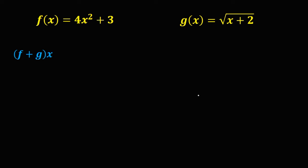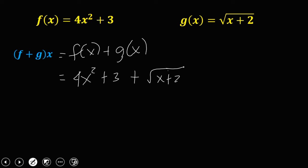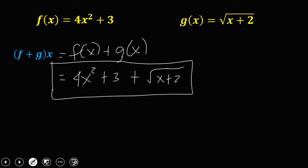Solve for f(x) + g(x). Substituting the values, we have 4x² + 3 plus √(x + 2). Since we cannot simplify this further, this is our final answer.